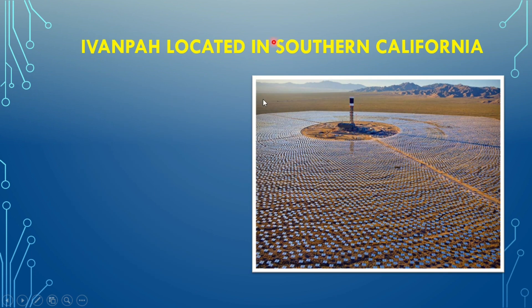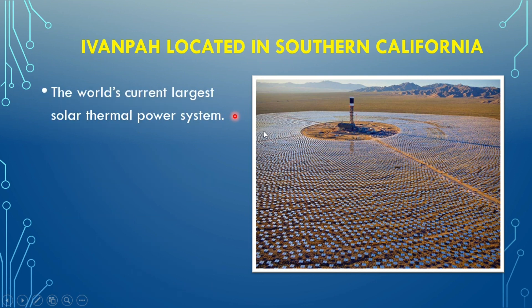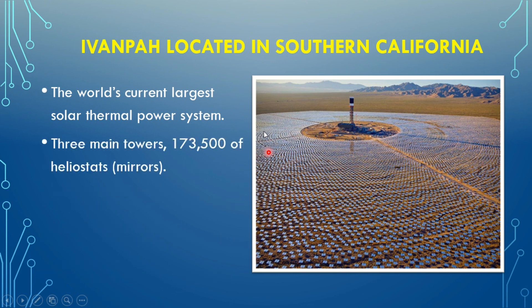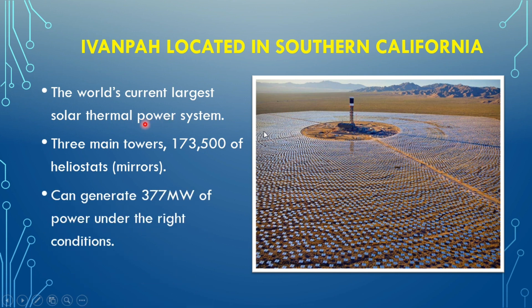This is a picture of the Ivanpah solar power plant, which is based on central receiver technology. It is the world's largest solar thermal power plant at 377 megawatts. It has three main towers, and other details are visible here.